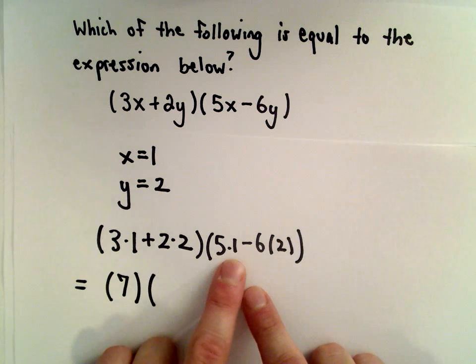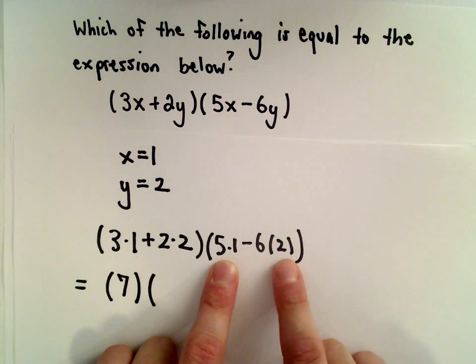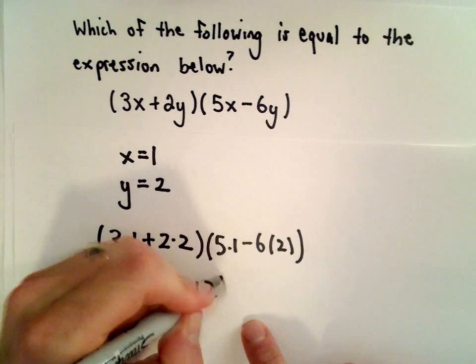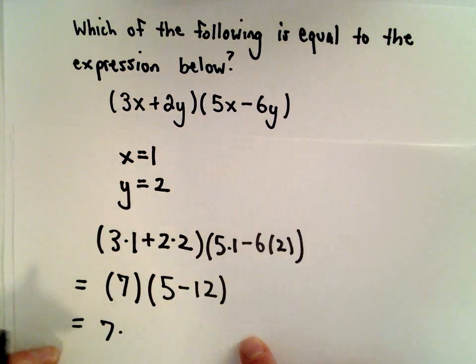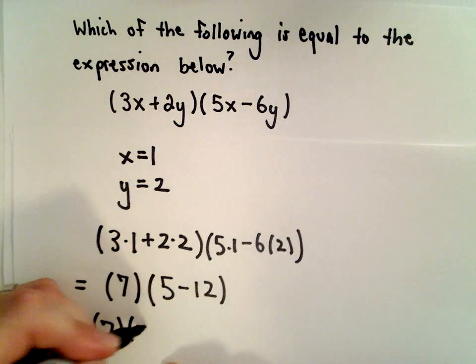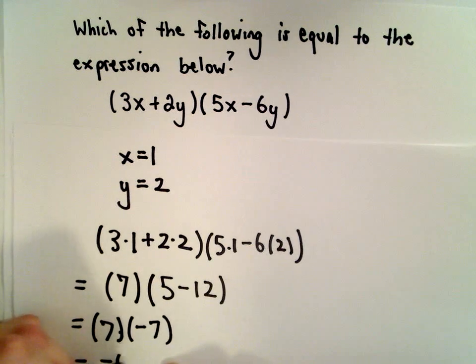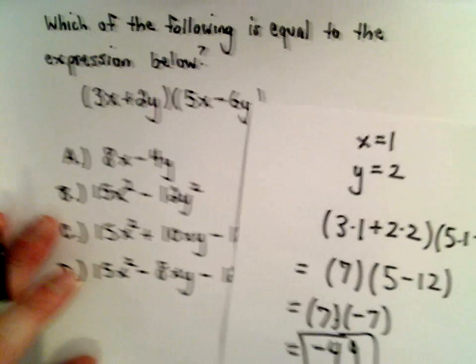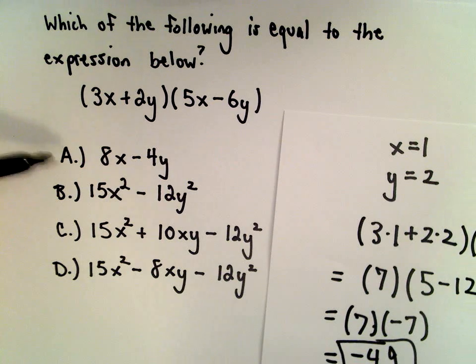This is going to be 3 plus 4, which is 7. You've got 5 multiplied by 1 is 5, negative 6 times 2, so 5 minus 12. That's 7 multiplied by negative 7, which gives us negative 49.